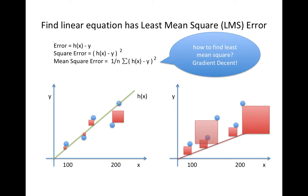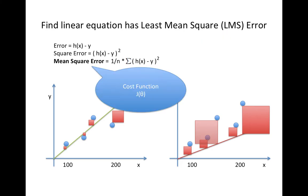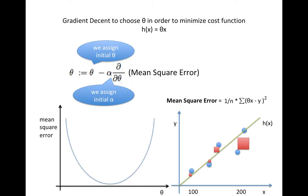We will use gradient descent to find the least value of the mean square error. The mean square error function is the cost function we want to minimize, and minimizing the cost function is our objective — sometimes called the objective function. Now we will see how gradient descent works to minimize our mean square error by adjusting the parameters of our linear equation.